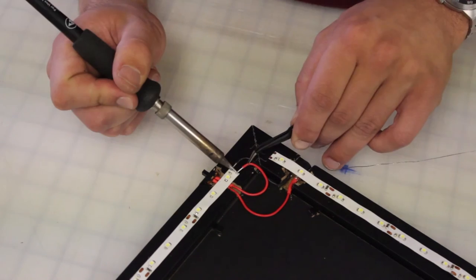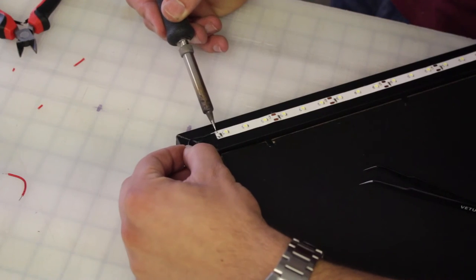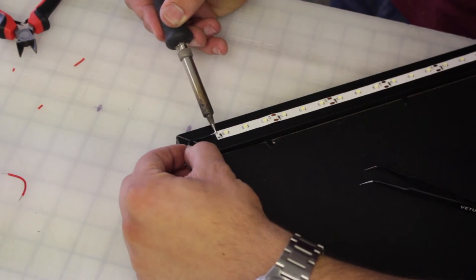Make sure to pay attention to the polarity of the wires. With the LEDs I used the side with the resistor on it was positive.